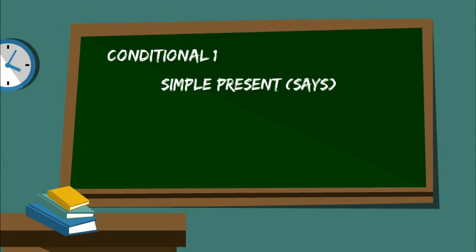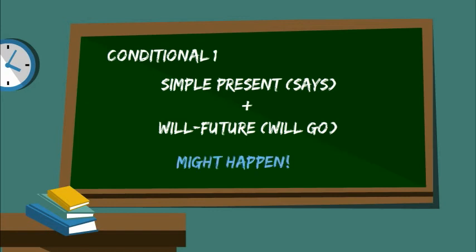So, let's summarize. Conditional one uses simple present, for example, says, and will future, for example, will go. There is a good chance that this will happen.